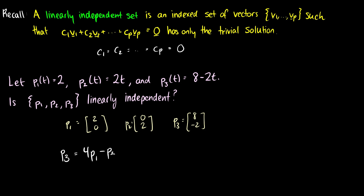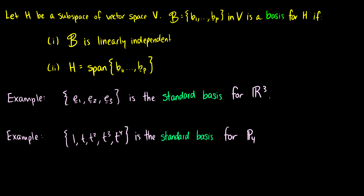If we want to make it linearly independent we can just remove p3. That's a quick review of linear independence. Now we'll introduce the basis.